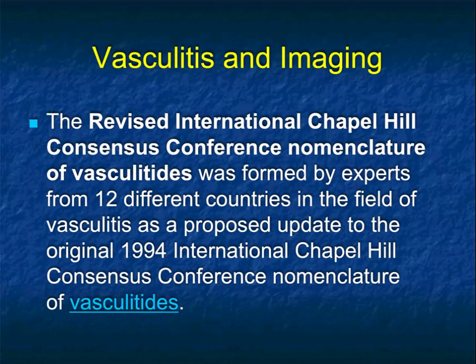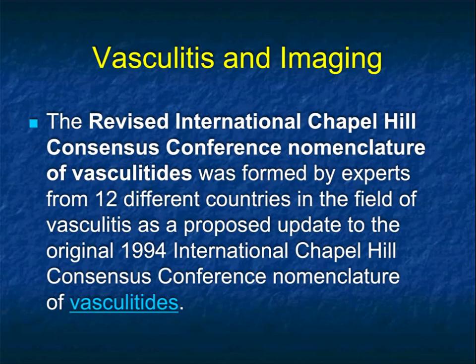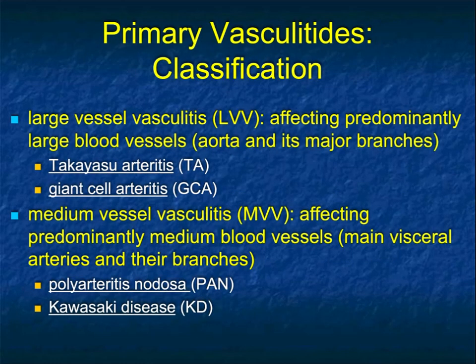When you look at where the vasculitis classification comes from, it comes from the Chapel Hill Consensus Conference, first done in 1994, with many updates since. It's this conference that has the nomenclature that everybody uses. If you really want to keep up to date, just make sure you're keeping up to date on the Chapel Hill Consensus.